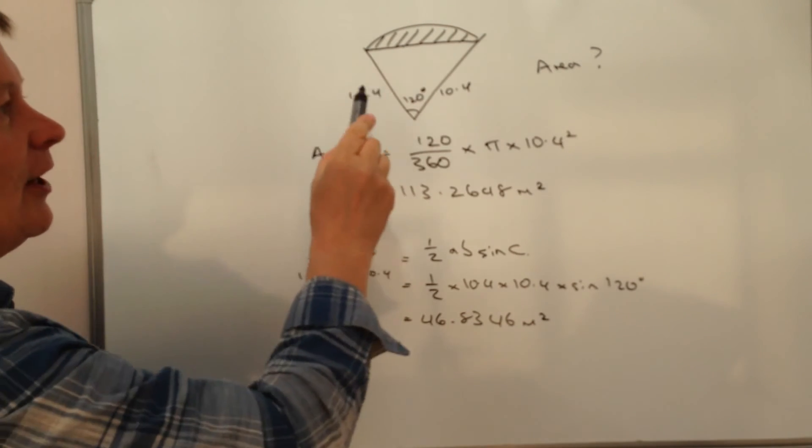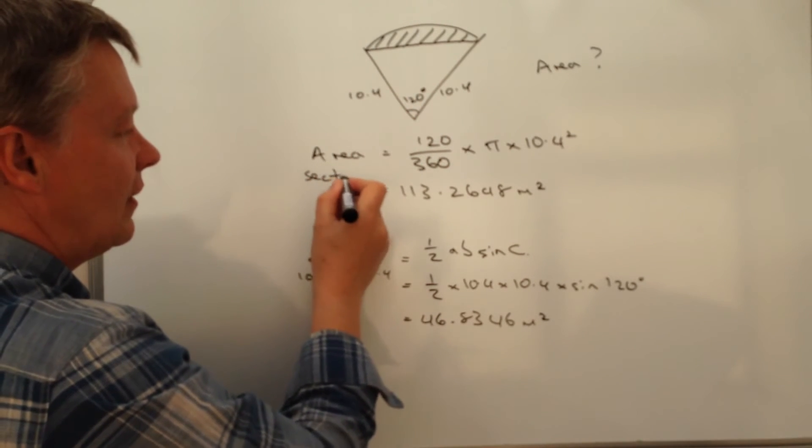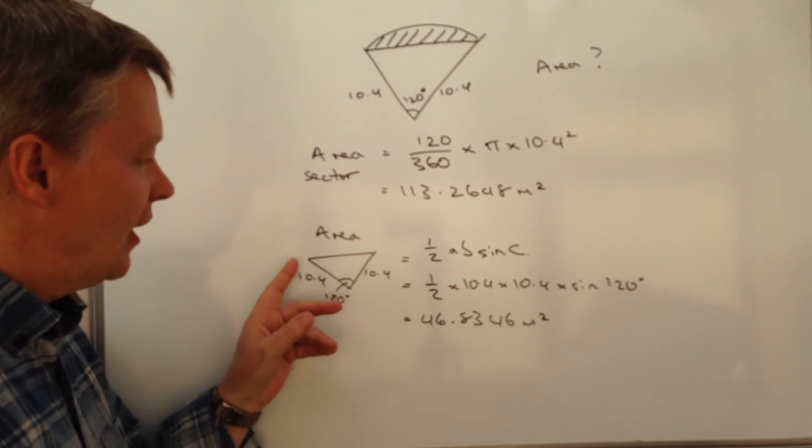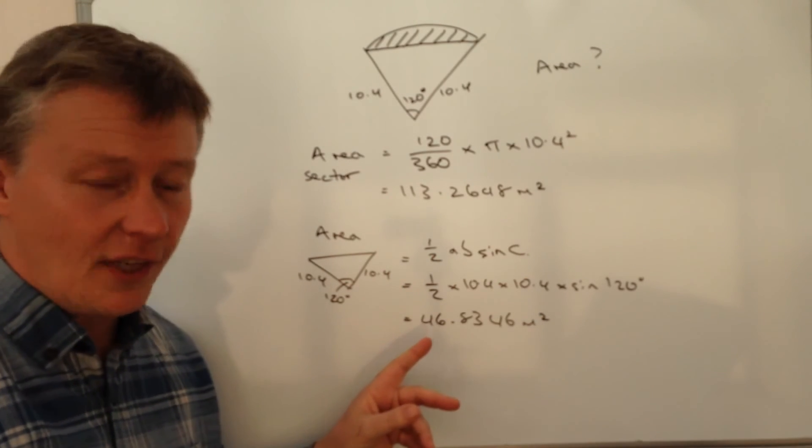Okay, so I've now got the area of the sector, which is this one here, and if you're not sure, please do have a look in the previous videos. Now the area of the triangle, which is I'm using the formula half a b sine c.